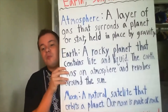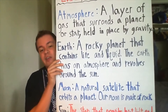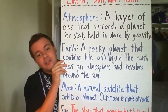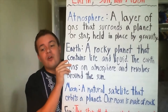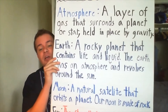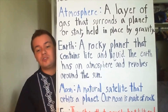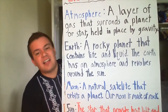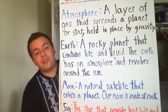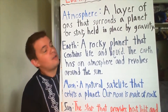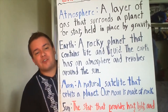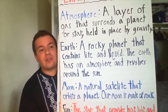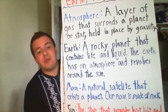Next up is the moon. The moon is a natural satellite that orbits a planet. Our moon is made of rock, so our moon is also solid. On earth, we only have one moon. However, some planets have up to 60 moons. Also important to know that the moon does not have much of an atmosphere. That's why the moon is full of craters. Because the moon doesn't have a lot of gravity, the atmosphere is really thin, and it's not an effective atmosphere in terms of protecting its planet from meteorites.